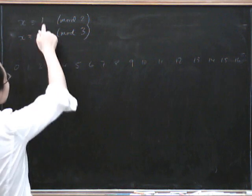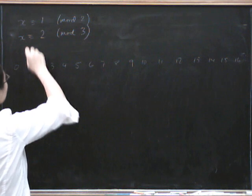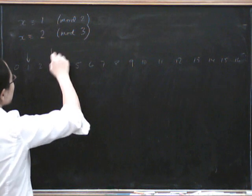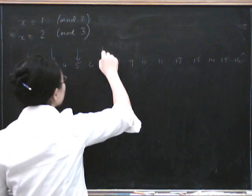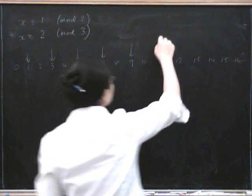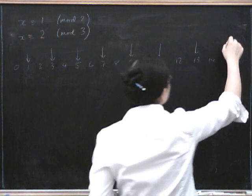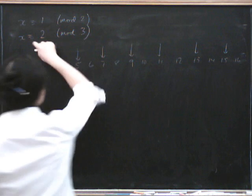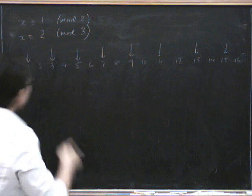To be congruent to 1 mod 2, I mark the odd numbers: 1, 3, 5, 7, 9, 11, 13, 15, and so on. What about being congruent to 2 mod 3?